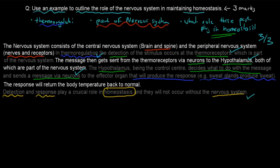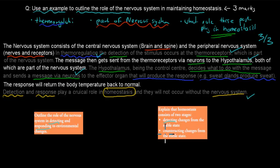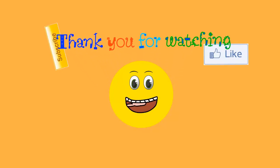This kind of question comes from two dot points in the curriculum. First, we had 'outline the role of the nervous system in detecting and responding to environmental change.' The dot point also states that homeostasis consists of detection and response — detecting change and counteracting change, which is the response. So homeostasis is all about detection and response, and the nervous system helps make that happen. Thank you for watching.